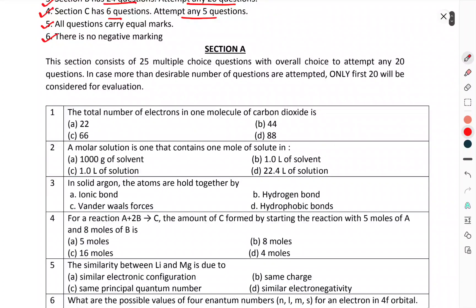First of all, Section A. Let's take this paper. We will talk about questions in this paper, we do not talk about the answers. So let's look at Section A. This section consists of 25 multiple choice questions with overall choice. Attempt any 20 questions. In case more than the desirable number of questions are attempted, only first 20 will be considered for evaluation.